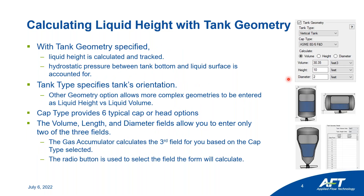One new feature of the gas accumulator is the ability to track the change in liquid height in the gas accumulator during a transient. In order to do that you need to specify the tank geometry inputs. With this tank geometry, a liquid height will be calculated and tracked, and the hydrostatic pressure between the tank bottom and the liquid surface will then be accounted for since we know that liquid height.